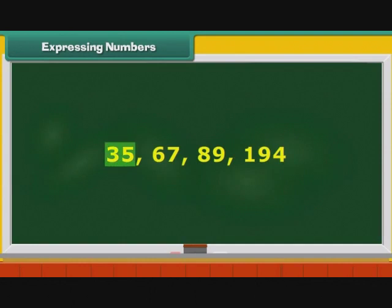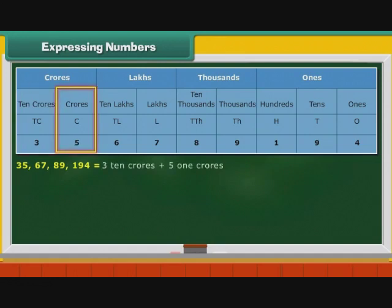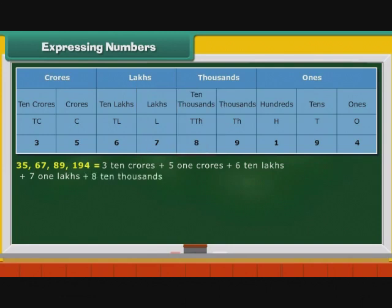Consider one more number: 35,67,89,194. It has four groups. Therefore, it belongs to the Indian system of numeration. Let us express it in expanded form. First, we arrange the number in the Indian place value chart. 35,67,89,194 may be expressed in expanded form as 3 × 10 crores + 5 × 1 crore + 6 × 10 lakhs + 7 × 1 lakh + 8 × 10 thousands + 9 × 1 thousand + 100 + 9 × 10 + 4 ones.